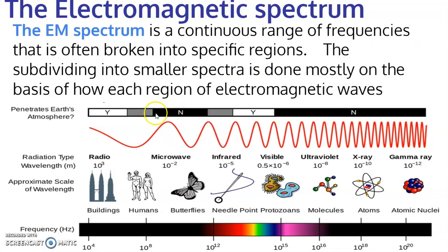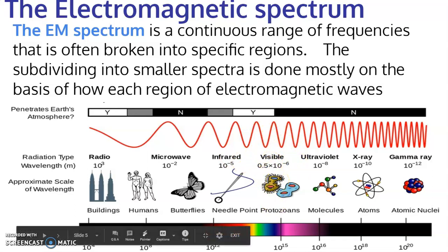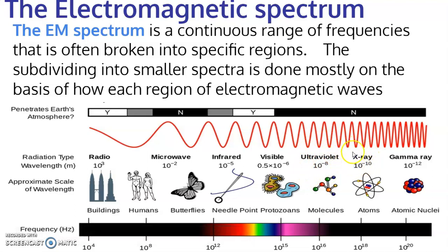The electromagnetic spectrum includes anything that is an electromagnetic wave. Radio waves are very large — up to thousands of meters. Microwaves are smaller, on the order of centimeters. Infrared gets even smaller — this is heat; when you feel warmth from a fire, that's typically infrared. Then you have the visible spectrum — what we can see, all the colors — which is very small in range. Ultraviolet is even smaller and is what gives you sunburn.